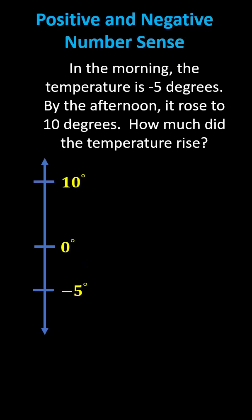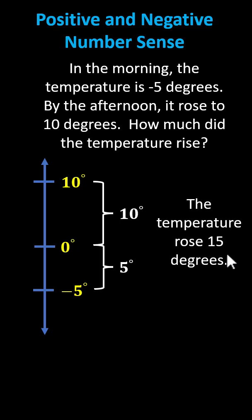Now we can determine how much the temperature rose from negative five degrees to positive 10 degrees. From negative five to zero degrees, the temperature rose five degrees. Then from zero to 10 degrees, the temperature rose another 10 degrees. Therefore, the temperature rose 15 degrees.